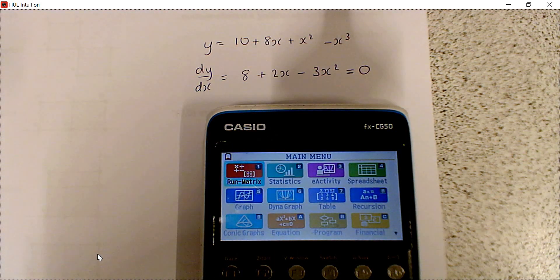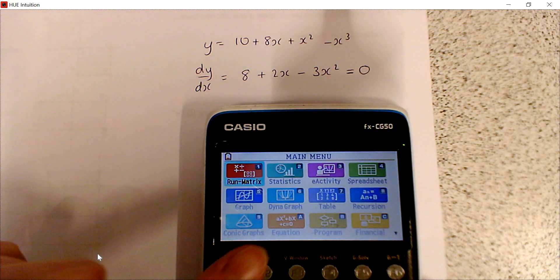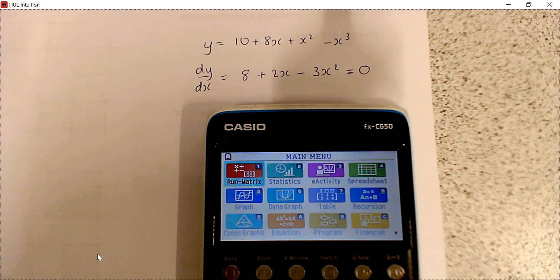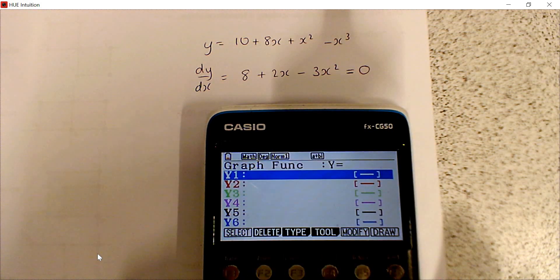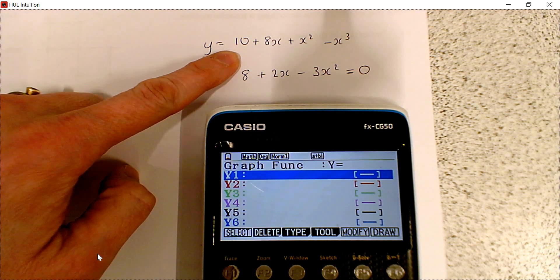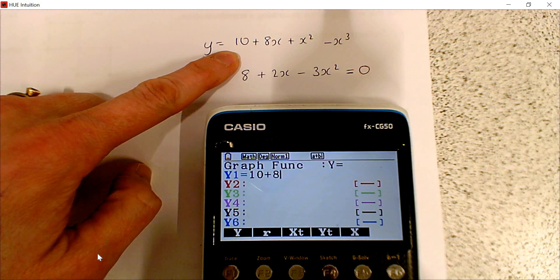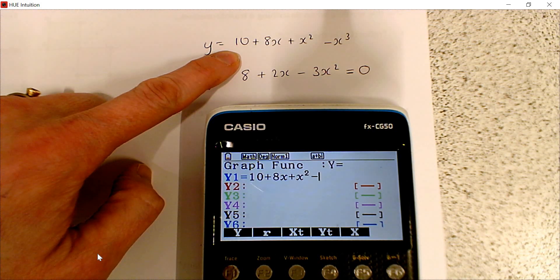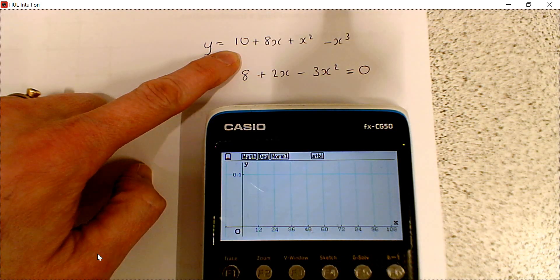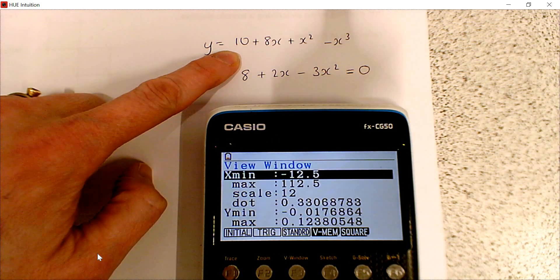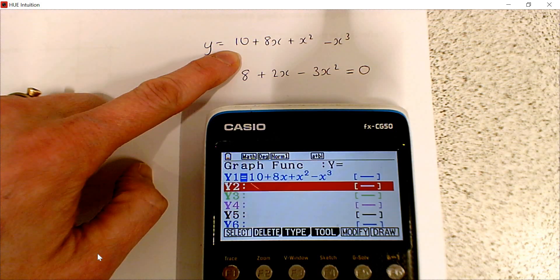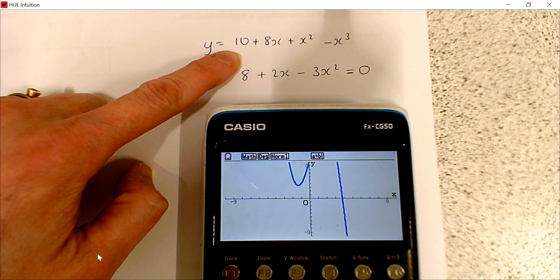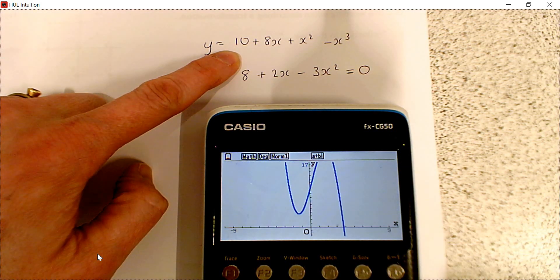You might want to think of using the equation solver, but actually I'm going to go straight to the graph because that's going to help me. I'm going to delete what's there and type in the equation of my graph: 10 plus 8x plus x squared minus x cubed. I'm going to sketch it. At the minute, my axes aren't very helpful. So I'll go view window and just go standard to give me a basis. I can see I've got part of my graph. I'm going to adjust it.